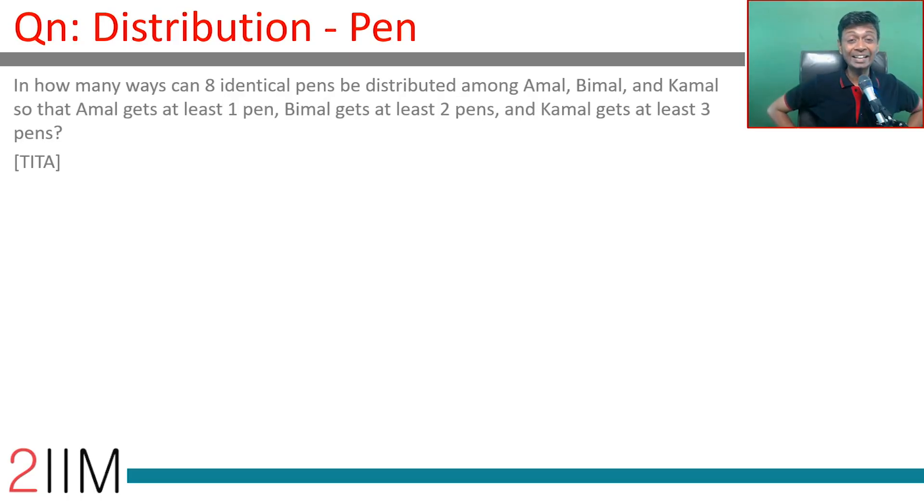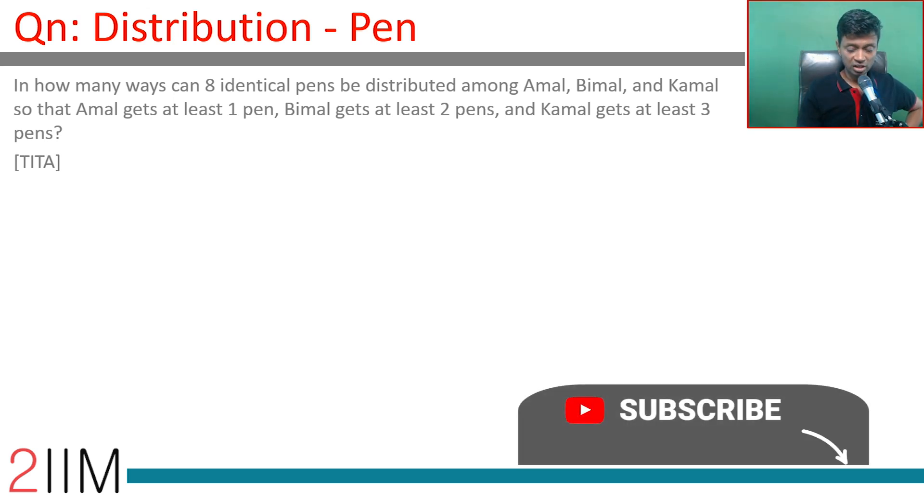In how many ways can 8 identical pens be distributed among Amal, Bimal and Kamal such that Amal gets at least 1, Bimal gets at least 2 and Kamal gets at least 3 pens?